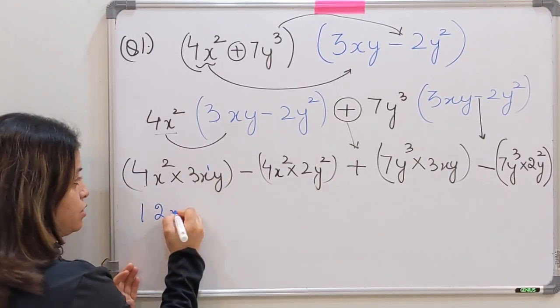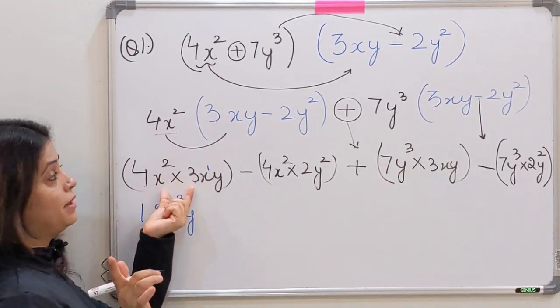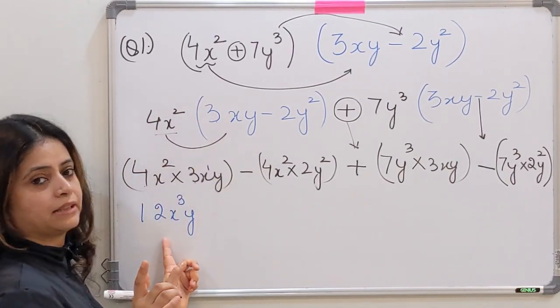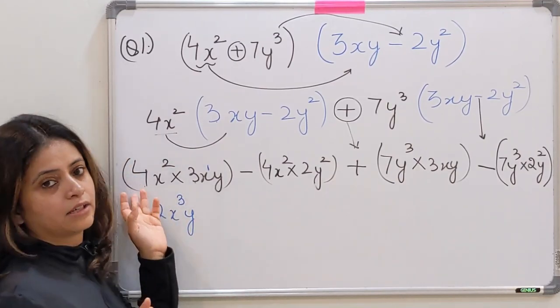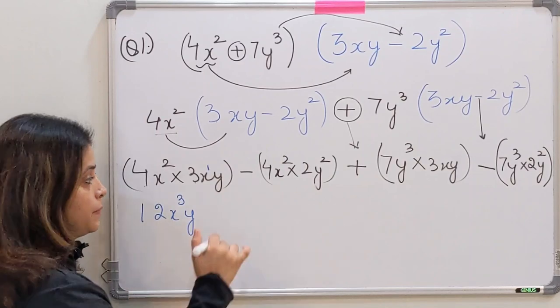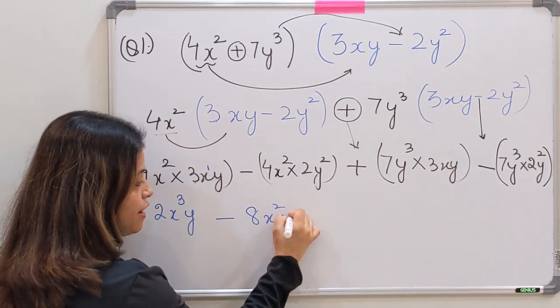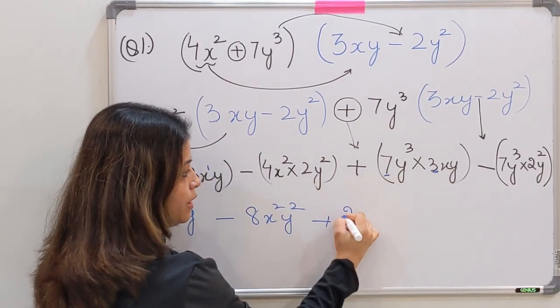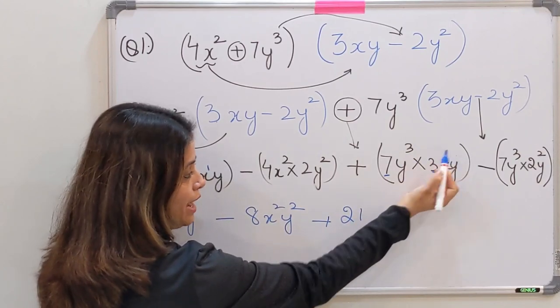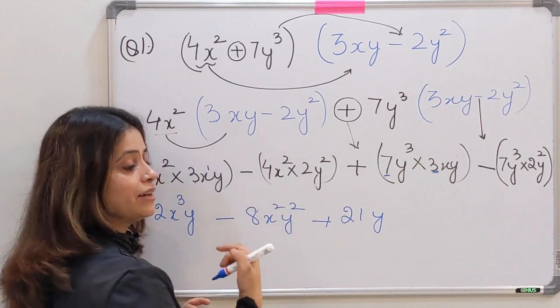Now x² and yaha x ki power 1, so x ki power 3 and y. This step is not important at all. If you can directly get the answer, very good. Nobody is expecting you to show this step. You can directly write: minus 4 twos are 8, x² y². Plus 7 threes are 21 y³ and y will be solved using exponential law: x to the power m into x to the power n is x to the power m plus n.